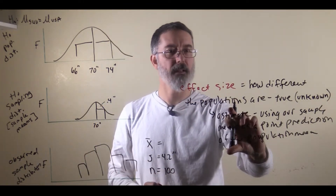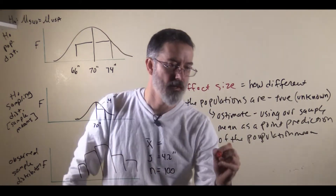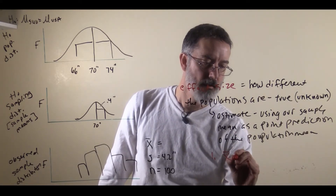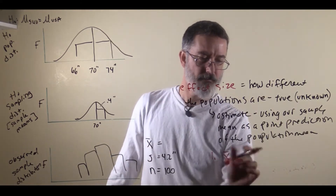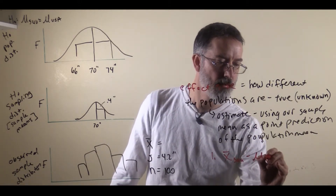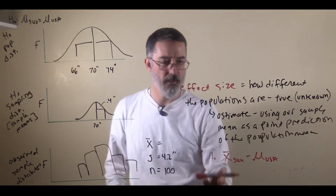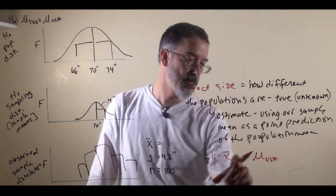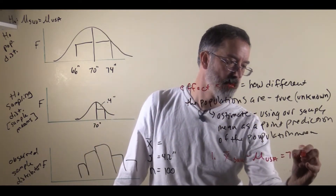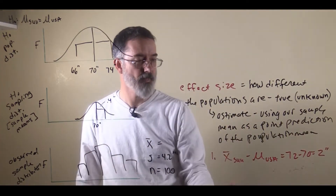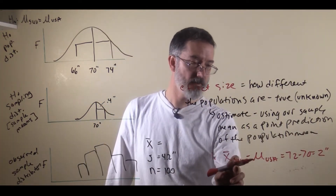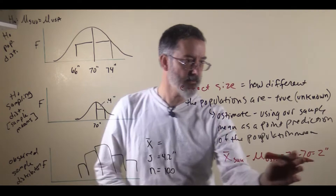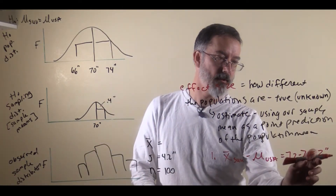When we have this estimate, we can calculate the effect size. One way to calculate the effect size is to subtract the population mean from the SUU sample mean. For example, with a population mean of 70, if our sample mean is 72, then 72 minus 70 equals 2 inches. In that case, our best guess, given a sample mean of 72, is that SUU students are 2 inches taller than American men. This is effect size in the original units that you are measuring.